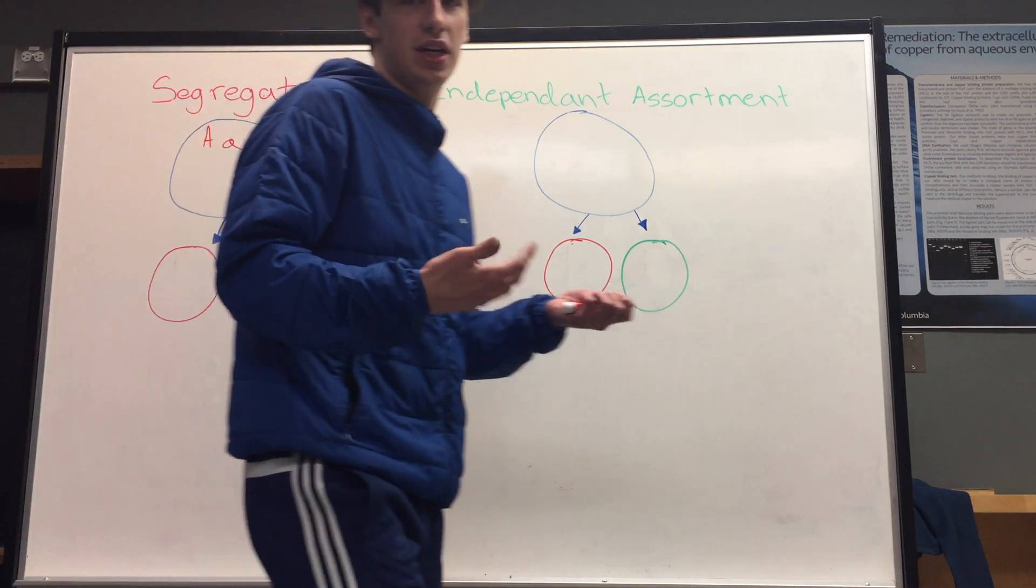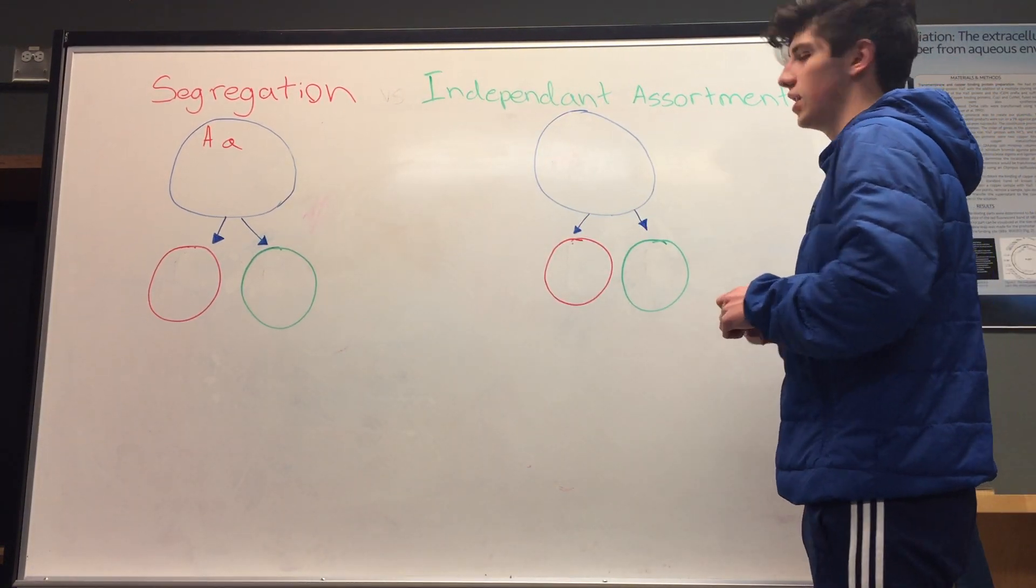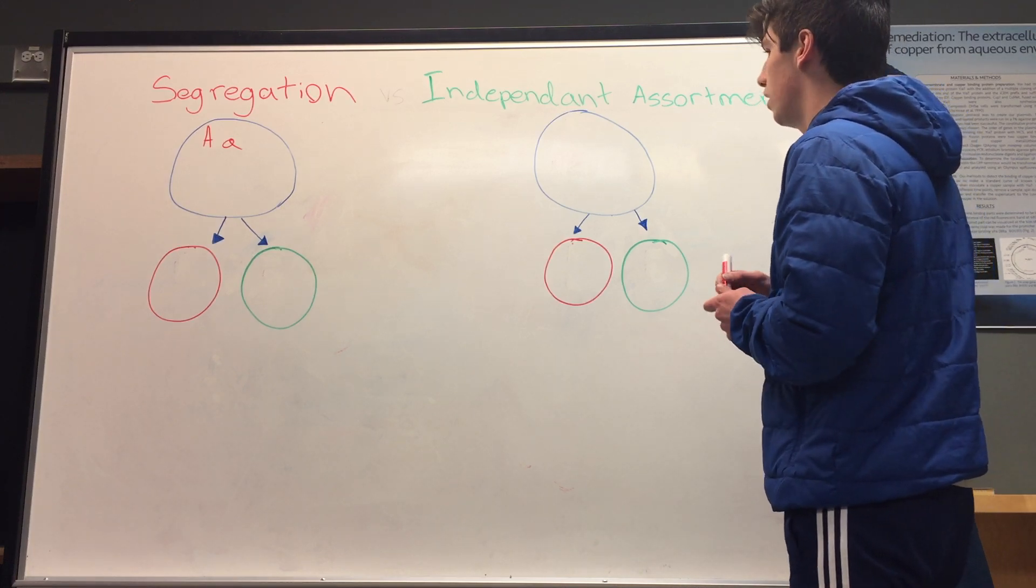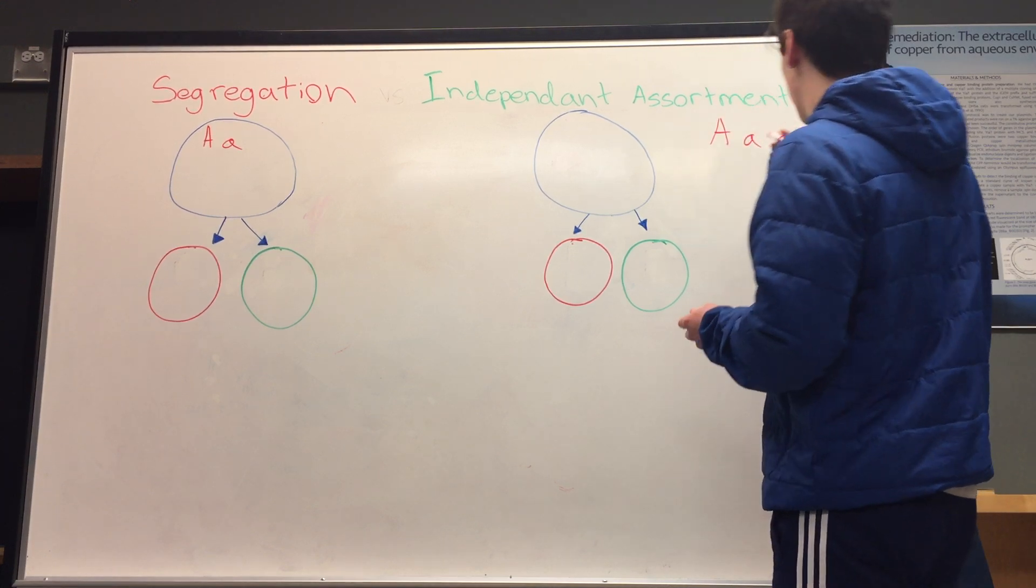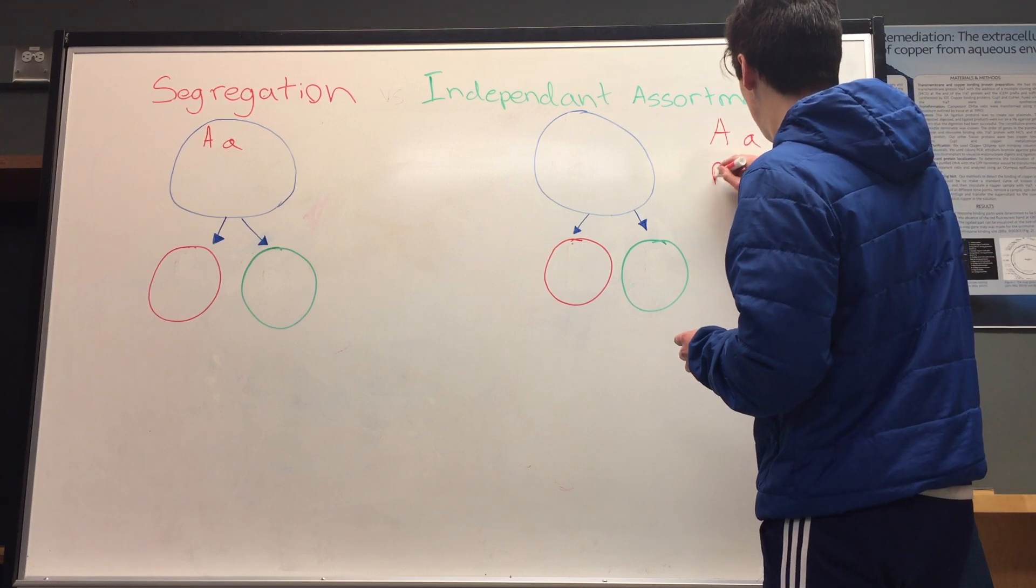Making sure that each gamete gets all the alleles. Whereas independent assortment is a little bit more complicated, it basically just states that the different loci, let's say for example A being one locus and B being another, assort independently from each other.